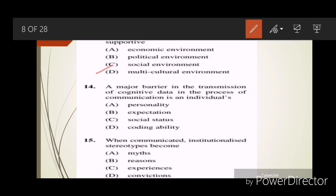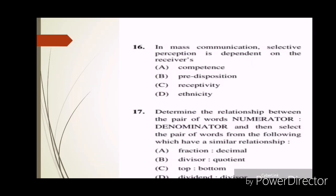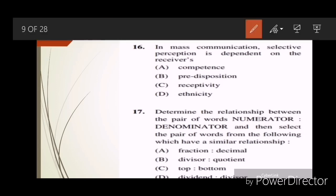Question fourteen: A major barrier in the transmission of cognitive data in the process of communication is an individual's? Answer D, coding ability. Question fifteen: When communicated, institutionalized stereotypes become? Answer C, experience. Question sixteen: Answer is C, receptivity.